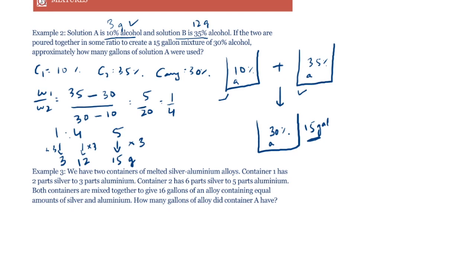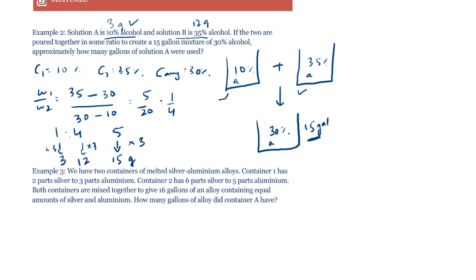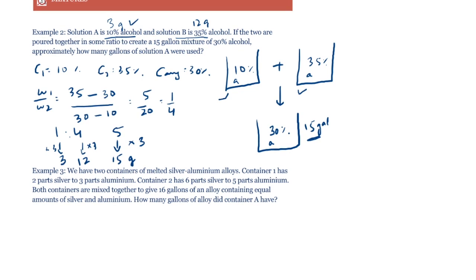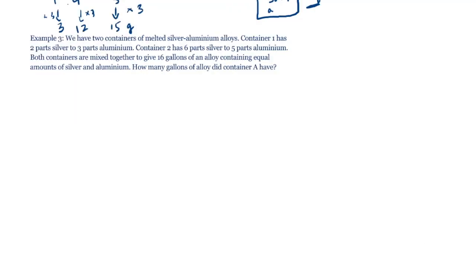So we can use either the formula or the scale, whichever is convenient. The formula is pretty convenient when we have C1, C2 and C average given to us. In case we do not have C average, then drawing the scale might be a better option. Let's look at another example.